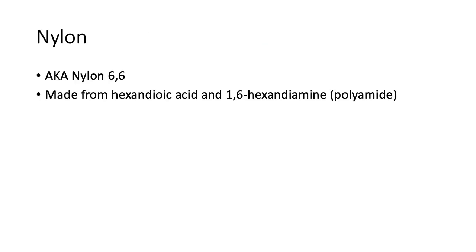So nylon — what do we know about nylon? It's also known as nylon 6-6. It's made from hexanedioic acid and 1,6-hexanediamine. Why is it that we don't need to give numbers on the hexanedioic acid? Remember, it's a dioic acid — they have to be on their ends. The amines can be anywhere, that's why we have to have the 1,6 to let you know where they are.